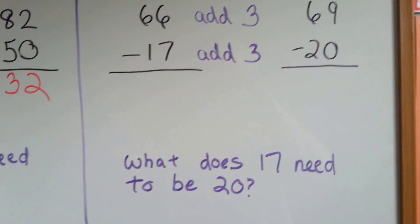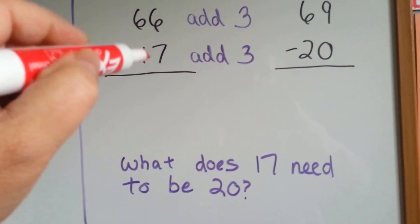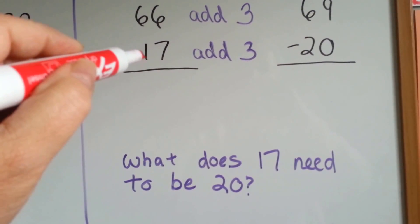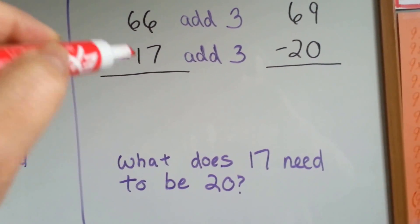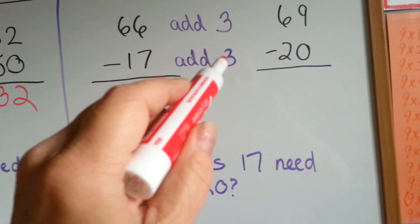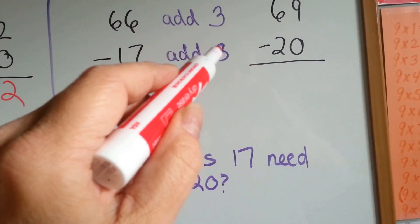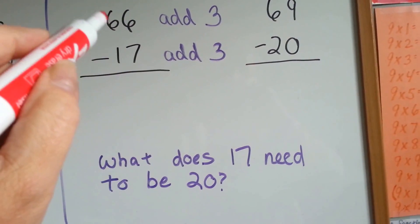Let's try one more time, one last time. What does the subtrahend 17 need to be a 20, an easier number to subtract? It needs 3. 17, 18, 19, 20. The top gets jealous.